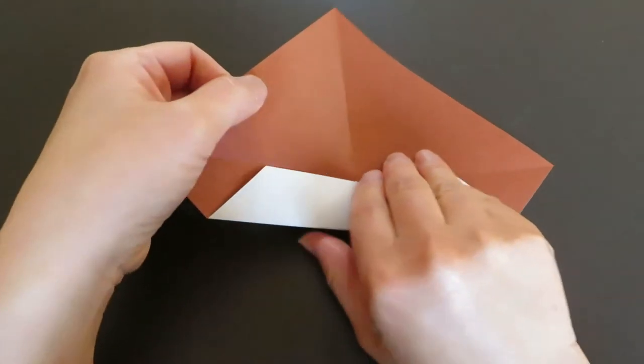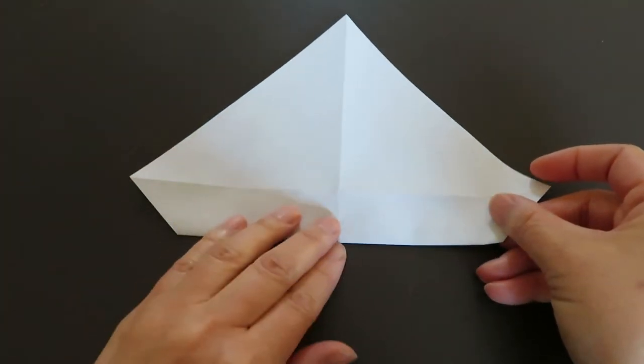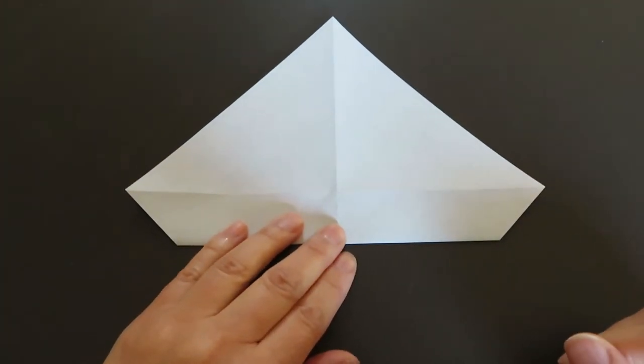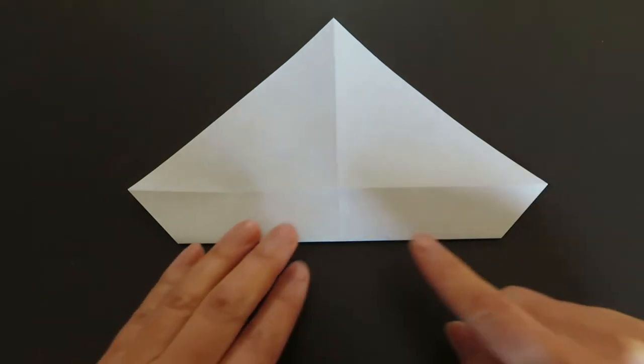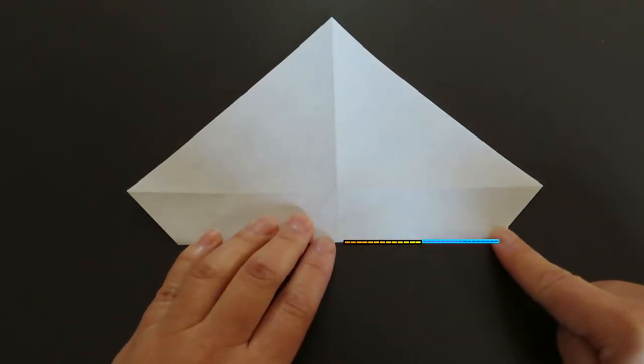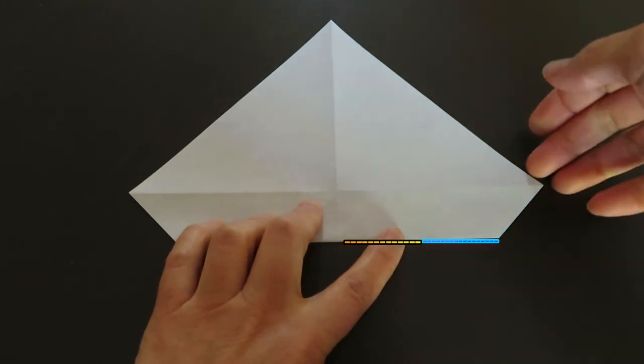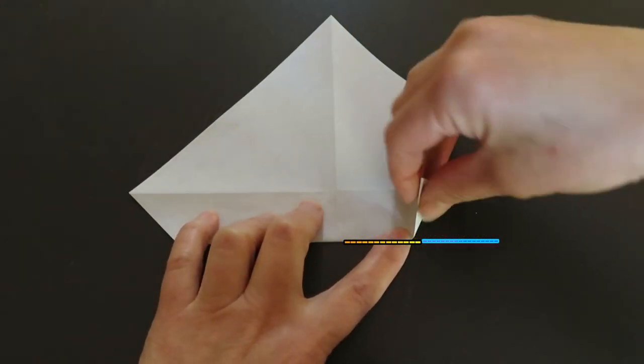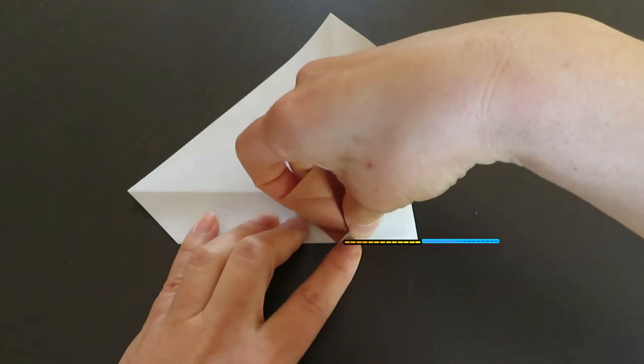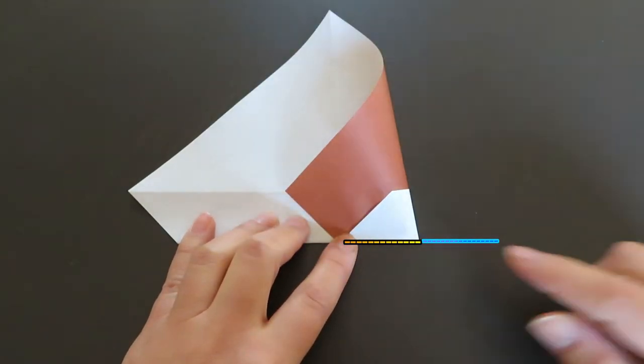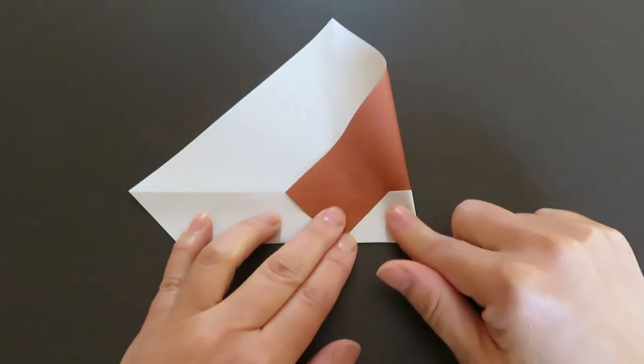Now flip the origami paper. We're going to fold this part in half. So fold like this. Can you see I just folded it in half?